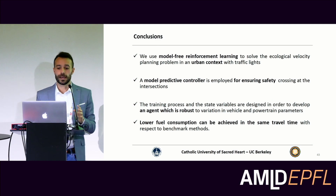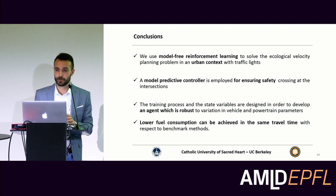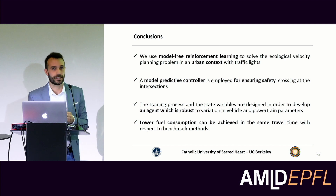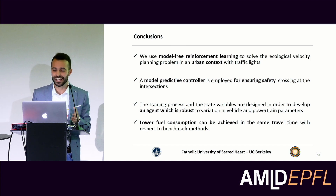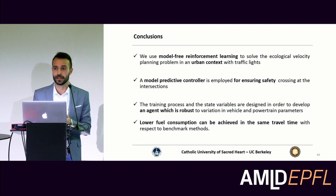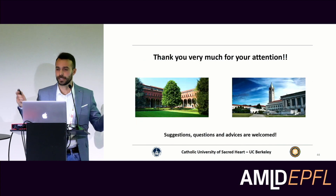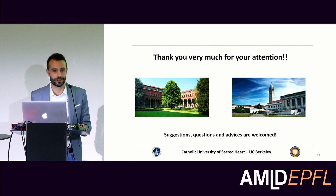To conclude, we applied model-free reinforcement learning to solve ecological velocity planning in an urban context. We coupled the algorithm with a model-predictive controller to ensure safety while crossing intersections. The most interesting result is that our agent is robust against uncertainties in vehicle and powertrain parameters, and the results allow for lower fuel consumption at the same travel time.